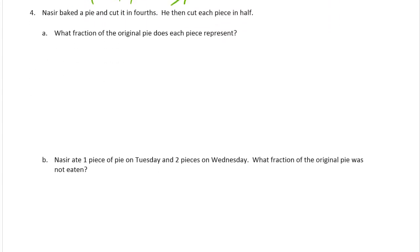Nasir baked a pie and cut it in fourths. He then cut each piece in half. What fraction of the original pie does each piece represent? Pies are usually round, and he starts with fourths. When you're making fractions with a circle, the rule is that all lines have to go through the center. Otherwise it just won't work. So that's fourths.